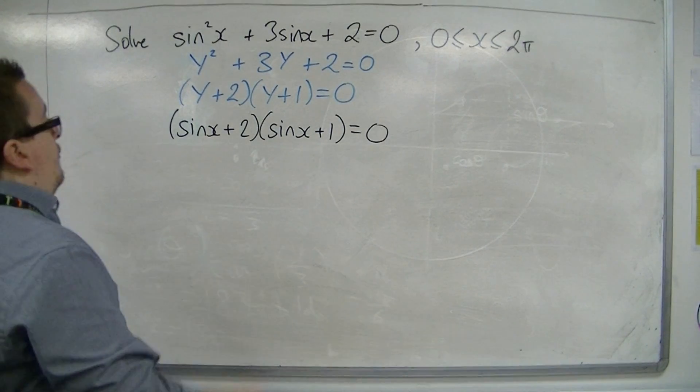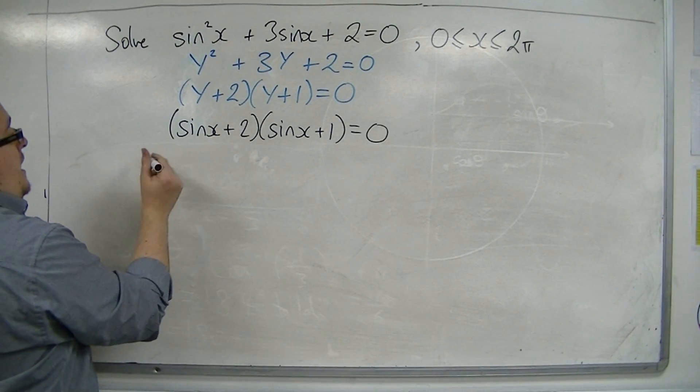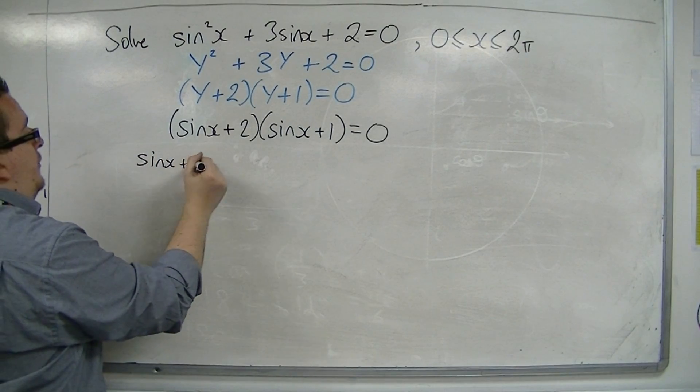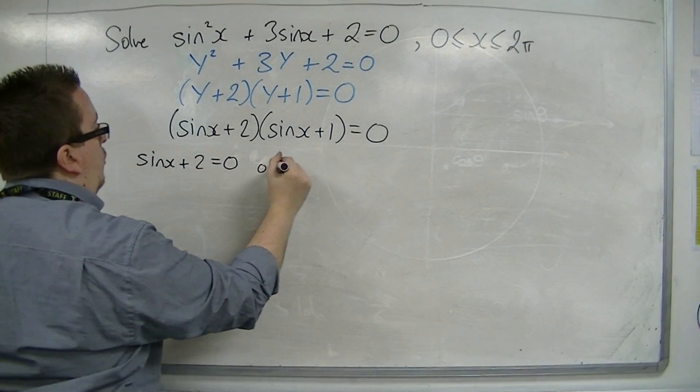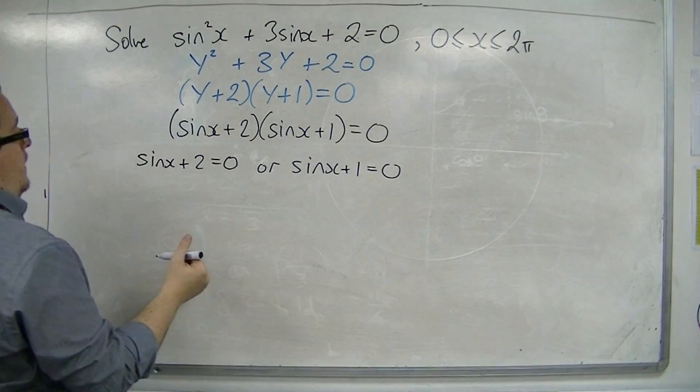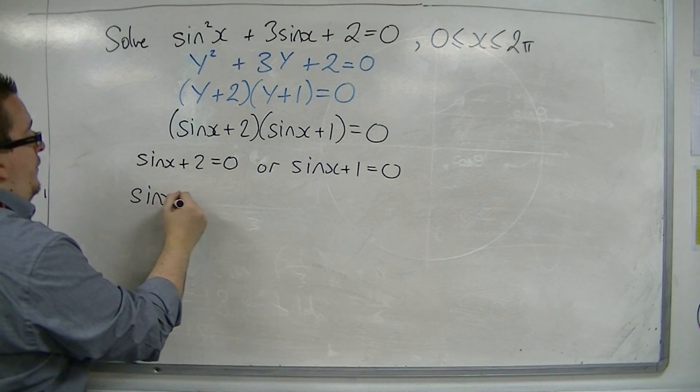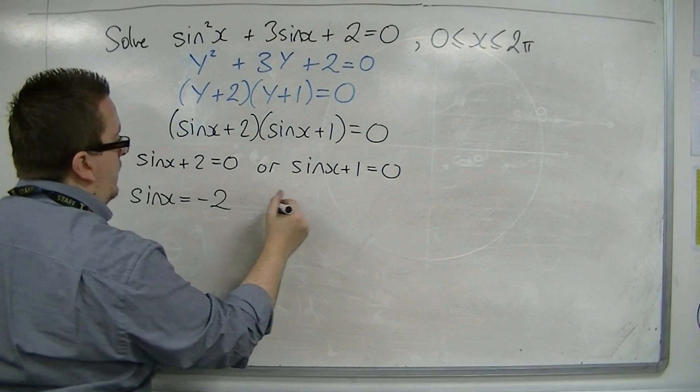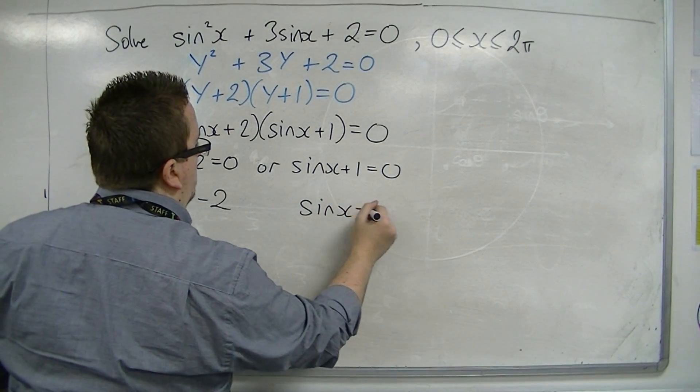Now, from that, we either then have sine x plus 2 is 0, or sine x plus 1 is 0. So we're solving the equations sine x equals minus 2, or sine x equals minus 1.